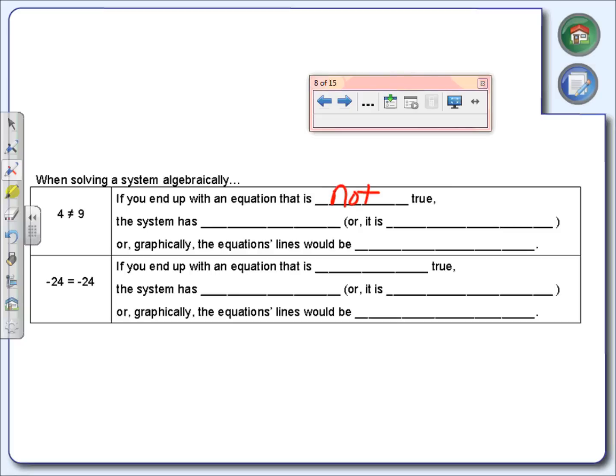When you end up with an equation that is not true, and they give you an example over here, 4 is not equal to 9, that is not true. This system has no solutions, or it is inconsistent. Or graphically, these equation lines would be parallel. Anytime we have no solution, we know the lines end up being parallel. Again, this is only if the equation is not true.